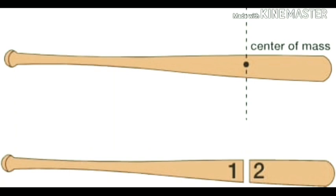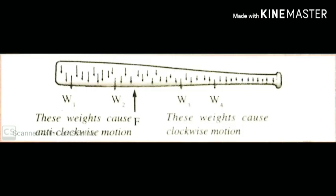When the finger is in the right place, the moments in the two directions are equal. When the moments in the two directions are equal, the baseball bat balances in horizontal directions. Let us check it out more how it balances the center of gravity.